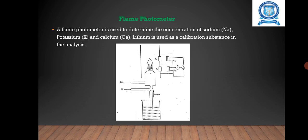Next one is flame photometer. It is used to determine the concentration of sodium, potassium, and calcium. Lithium is used as a calibration substance in the analysis. A colorless flame appears yellow for sodium, violet for potassium when their solutions are dispersed into the flame. It is also used in the analysis of blood or urine.